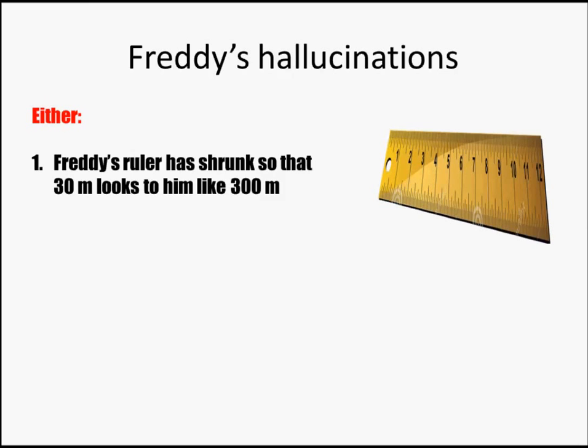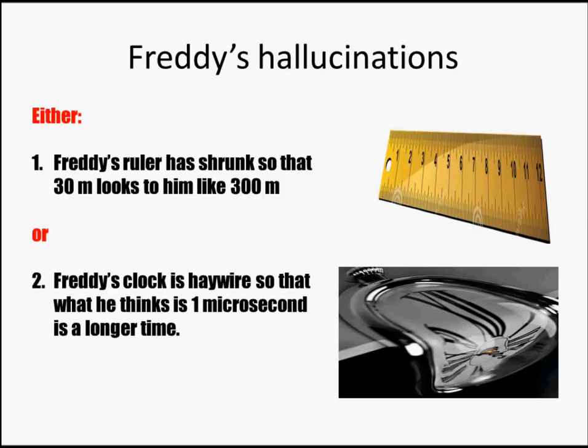So, let's have a look at the kind of hallucinations that Freddy is having. What would have to be happening for Freddy to see the light flash 300 meters ahead, instead of 30 meters, after one microsecond? Either Freddy's ruler has shrunk, so that 30 meters looks to him like 300 meters. Possible. Weird, but possible. Or Freddy's clock has gone haywire, so that what Freddy thinks is one microsecond is really a much longer time. Also, a little bit weird, but possible.